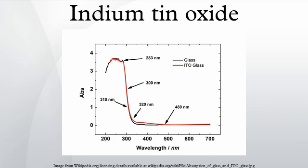Indium-tin oxide is typically encountered as an oxygen-saturated composition with a formulation of 74% indium, 18% O2, and 8% Sn by weight. Oxygen-saturated compositions are so typical that unsaturated compositions are termed oxygen-deficient ITO.